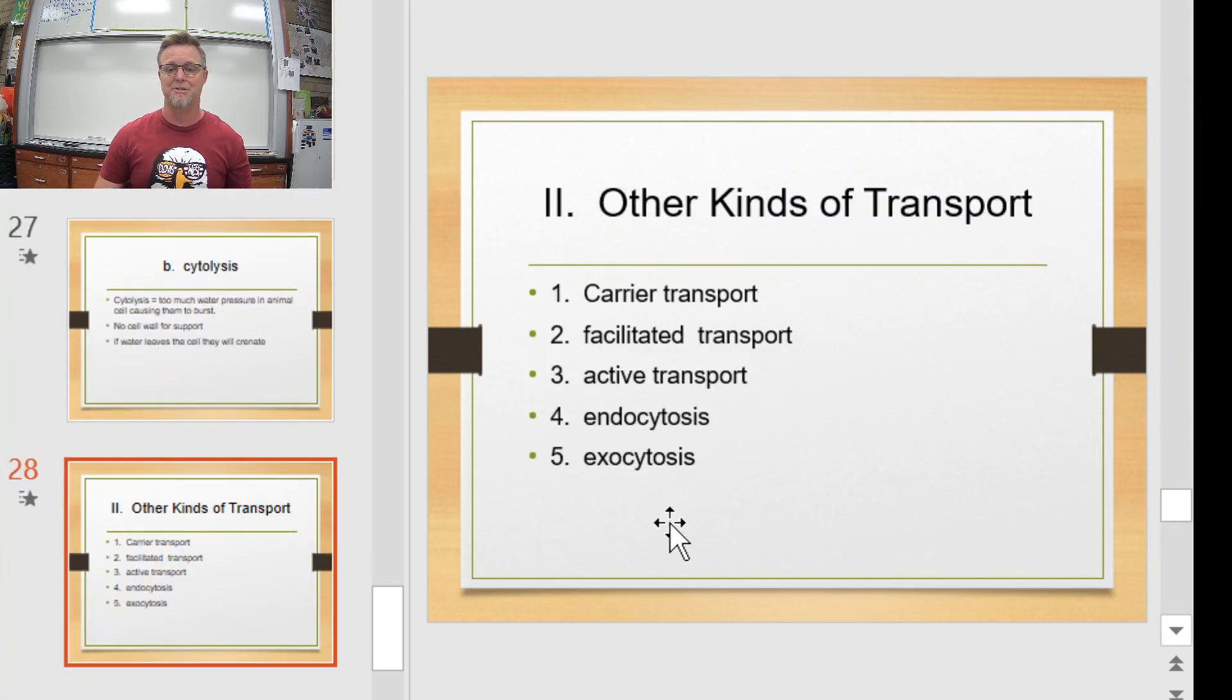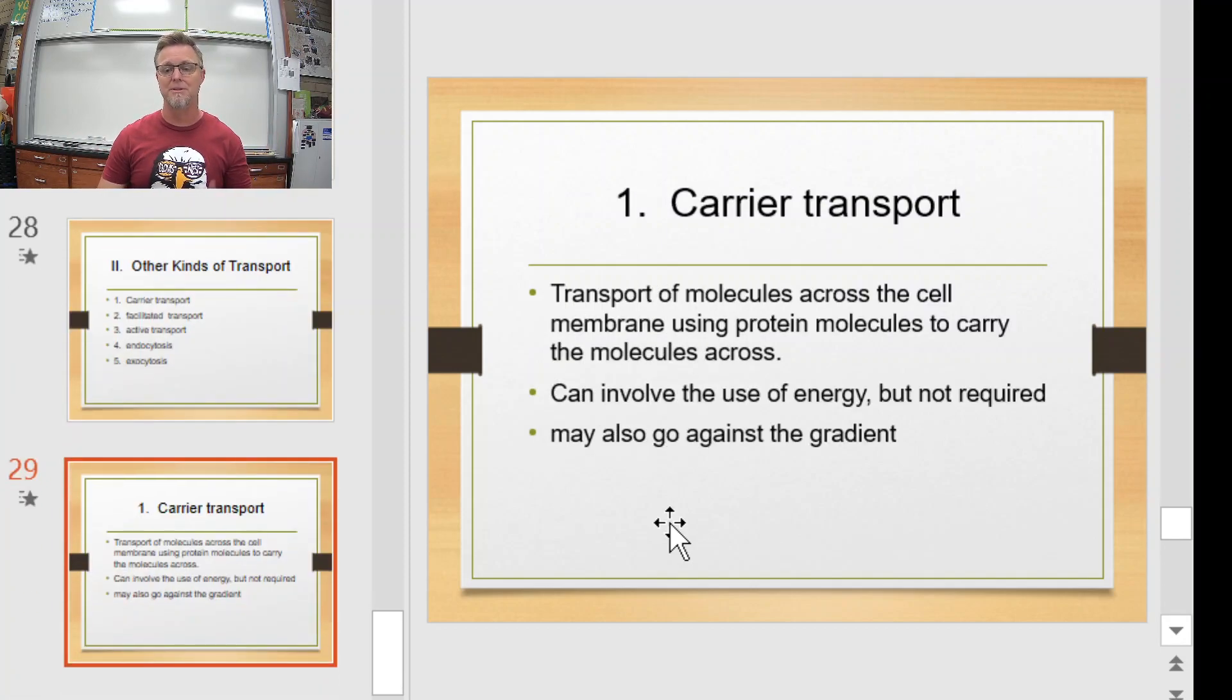That brings us to some other kinds of transport. Carrier transport, facilitated transport, active transport, endoexocytosis. Now, when we use the word carrier transport, what we're really doing is kind of setting the stage for those other kinds of transport that I just mentioned. This is transport of molecules across the cell membrane using a protein to help carry it across. Things that are big, things that are charged, remember, they can't get through the membrane without help. This doesn't mean, carrier transport doesn't mean that you're always going to use energy. Sometimes you will, but not always. Anyways, facilitated diffusion is carrier transport, but it doesn't require energy. And carrier transport can even sometimes go uphill or go against the concentration gradient, which I'll explain more of in a minute.